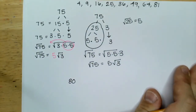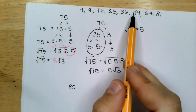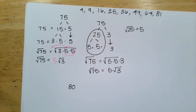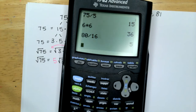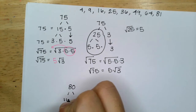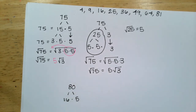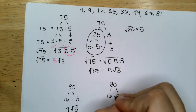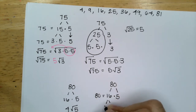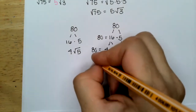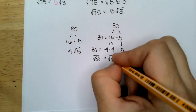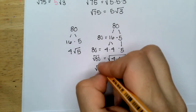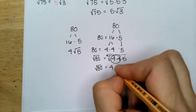For the square root of 80: looking at the perfect squares, try dividing by 16. 80 divided by 16 is 5, so 80 is 16 times 5. Since 16 is 4 times 4, the square root of 80 equals the square root of 4 times 4 times 5. The pair of 4s comes out, giving 4 times the square root of 5.